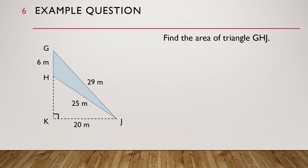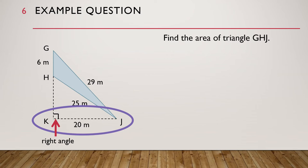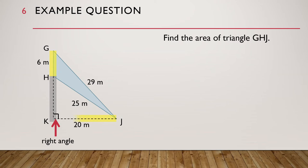Let's look at an example. The diagram shows a triangle GHJ. Find the area of triangle GHJ. Can you see the right angle? Notice that this side of the triangle is perpendicular to the line that starts from the other vertex J of the triangle. So these are the base and height of triangle GHJ. The grey part is not part of the base.